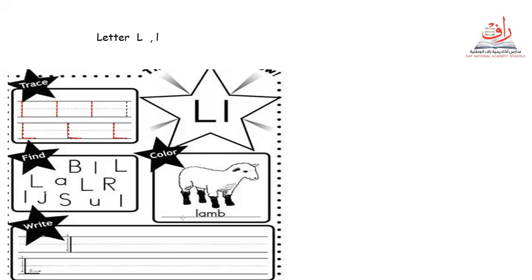What is this? Let's all together start reading. This is lamb. Lamb. Good job. Now let's find the capital and small letter L to color. This is letter L. This is B. This is L. Capital letter L. This is A — A says 'a'. We have letter L also. This is R — no, this is not L. We have a capital L and a small letter L. This is J for jet. This is S. Let's see the letter U — U says 'a', umbrella. And this last letter is L.